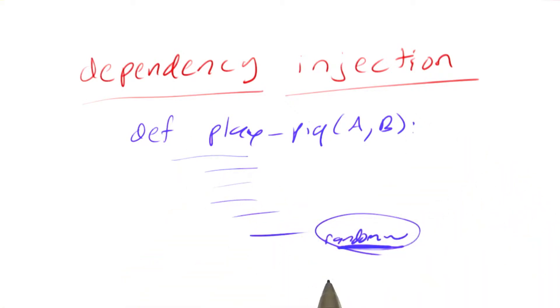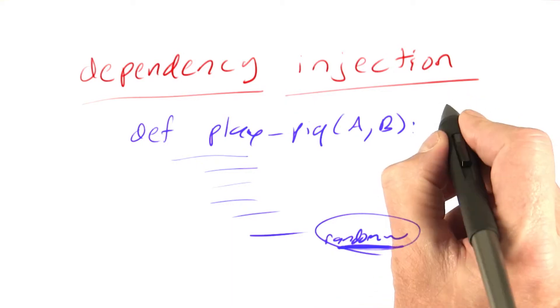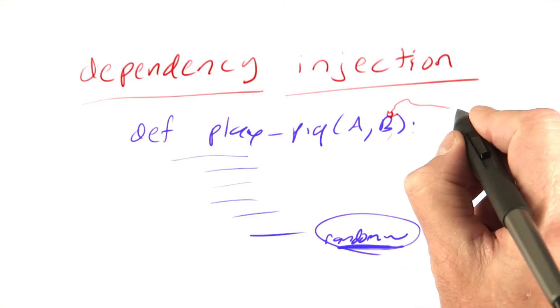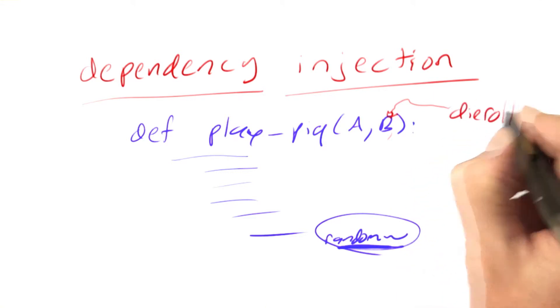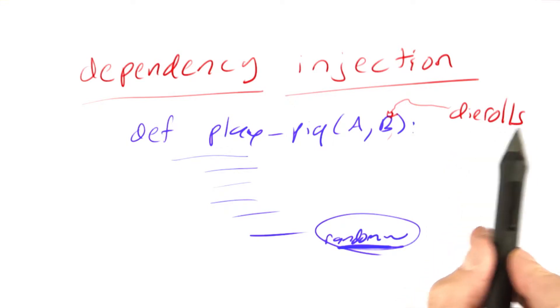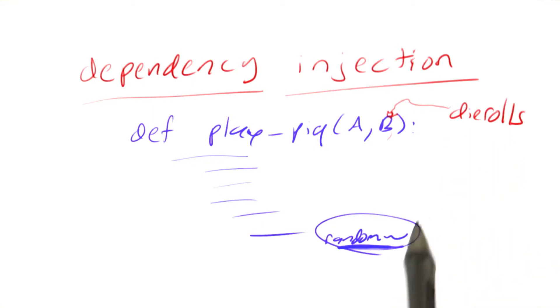How do we inject something into a function? We just add it as an argument. So let's add in the argument here and call it die rolls, and say that's going to be a sequence or an iterable that will generate possible die rolls. In the normal case, that'll just be random numbers exactly like it was before, and we don't care what they are, but when we want to test the function, we can inject the die rolls that we want.